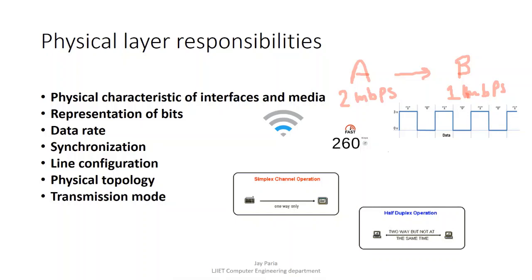Line configuration refers to what type of configuration we are using — it can be point-to-point or point-to-multipoint. Then after, transmission modes: it can be simplex, it can be half-duplex, or it can be full-duplex.